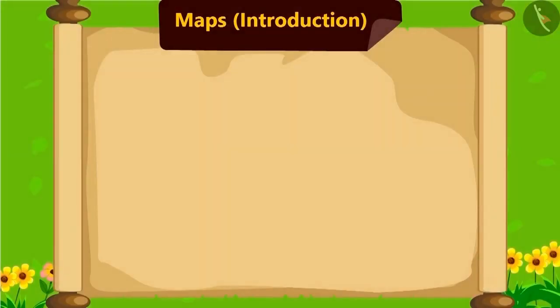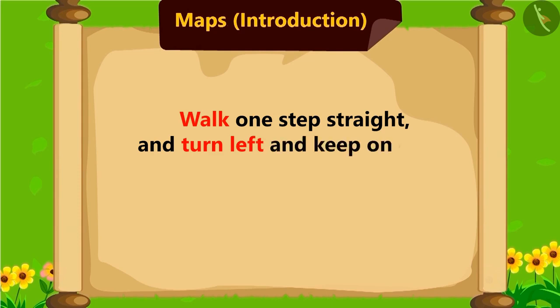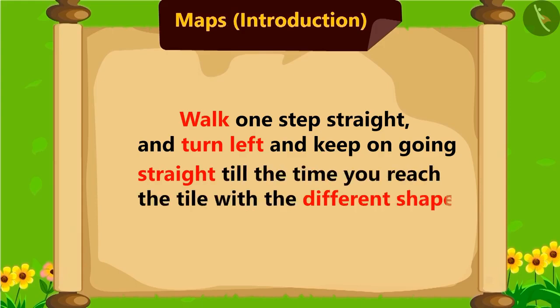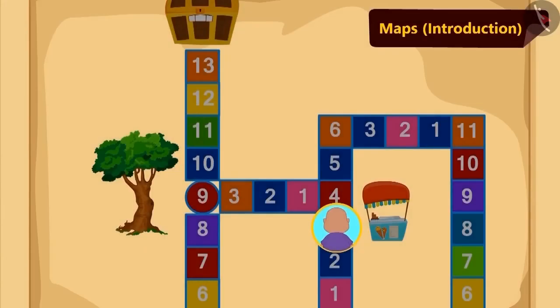Come, let's see what was written in the next instruction: walk one step straight and turn left, and keep on going straight until the time you reach the tile with a different shape. Now walk one step straight and turn left and keep on going straight.